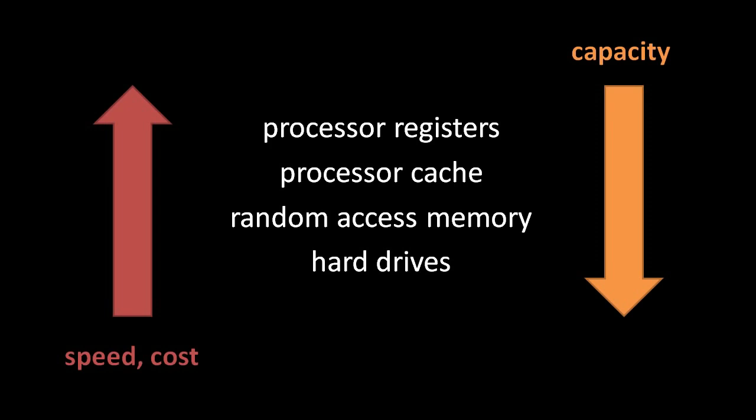Memory access is optimized because it's generally faster to get a chunk of bytes from memory in one read rather than to get each byte one at a time. On systems with this cache behavior, a very effective optimization strategy is to maximize locality — to keep the bytes of your code and data as close to each other as possible. If the bytes of memory needed by a processing-heavy part of your code are scattered far away from each other, they are less likely to all be in the cache at once, meaning the CPU is more likely to have to wait for reads of memory as it does the work.